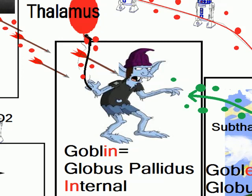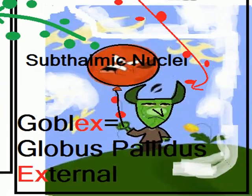Here we have a goblin which represents globus pallidus internal — the 'I' at the end signifies it is internal — and he's holding a balloon which is basically the thalamus. Over here we have another creature called Goblex, to signify globus pallidus external, and he is also holding a balloon, but this time it is the subthalamic nucleus.